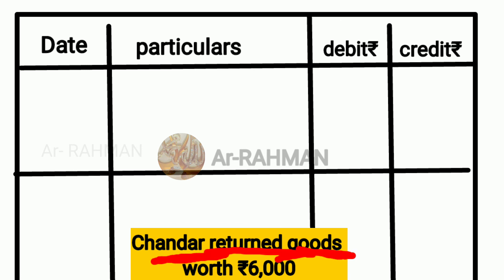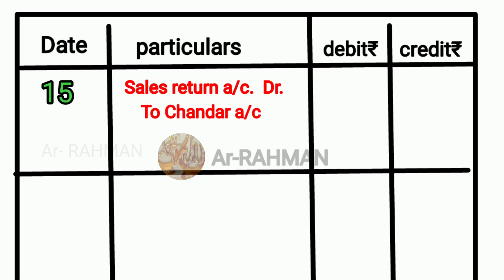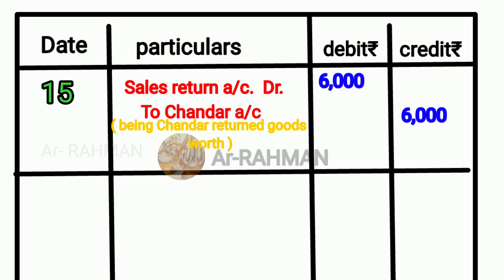Next question: Chander returned goods worth Rs.6,000. Sales credit, sales return — always debit. So sales return account Dr, to Chander account. The value is Rs.6,000 and here also Rs.6,000. Narration: being Chander returned goods worth Rs.6,000.